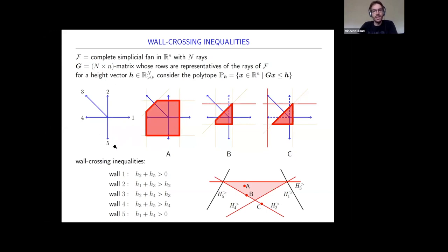For wall five involving rays one, four, and five, the linear dependence is one plus four equals zero, giving the inequality H_1 + H_4 > 0. I have drawn these inequalities in dimension five—since we have five rays—but I've intersected them with a well-chosen two-dimensional affine subspace.